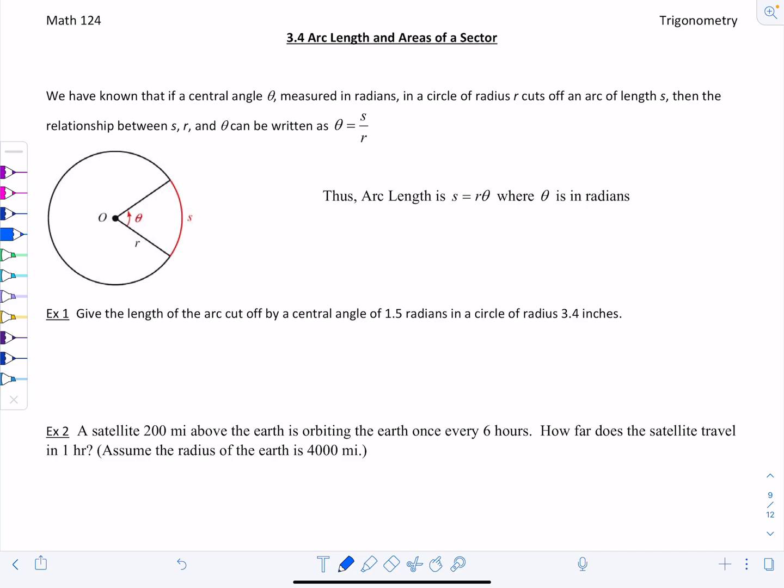We've known that if a central angle theta measured in radians and a circle of radius r cuts off an arc of length s, then the relationship between s, r, and theta can be written as theta equals s divided by r.